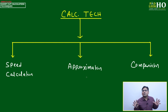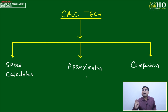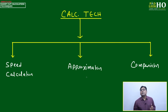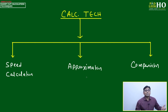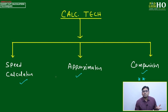No extra effort is required because these 23 sessions will explore every point. Just take the sessions one by one and everything will be programmed into your brain automatically. The three areas of calculation are speed calculation, approximation, and comparison. Speed calculation is the building block of Vedic math — if you're not good at speed calculation, you won't be able to apply approximation and comparison effectively.